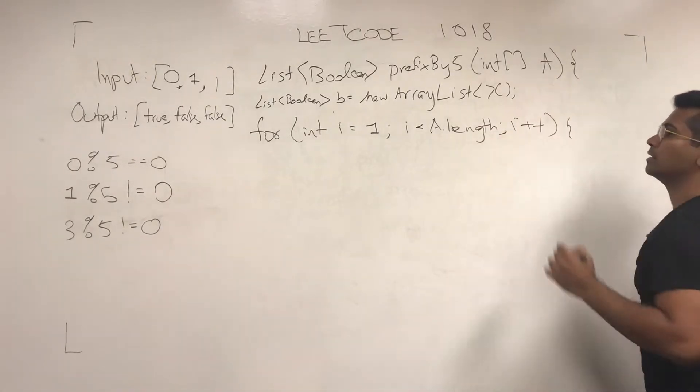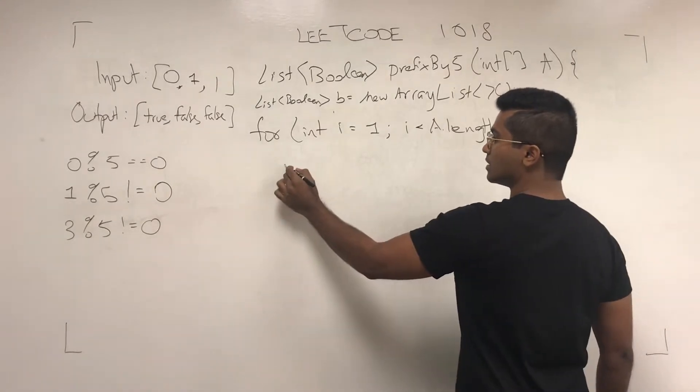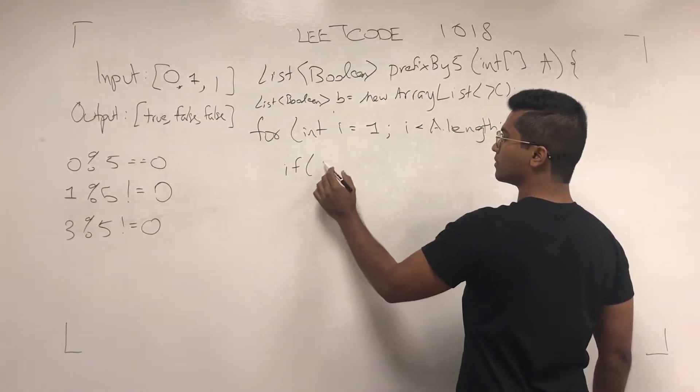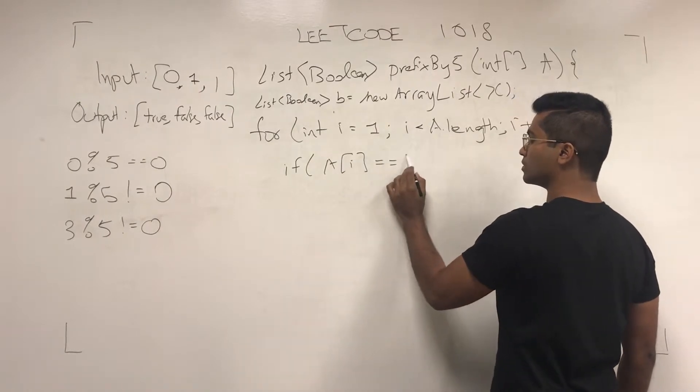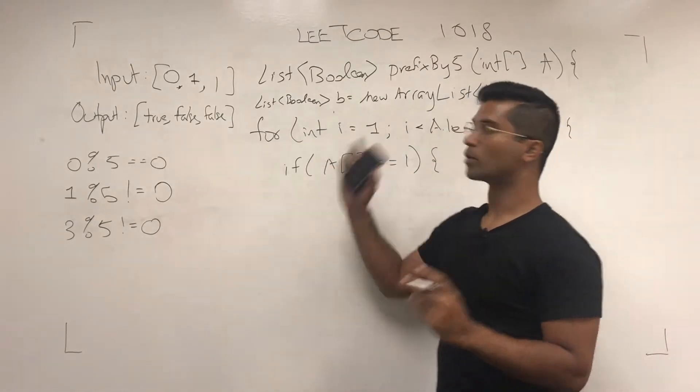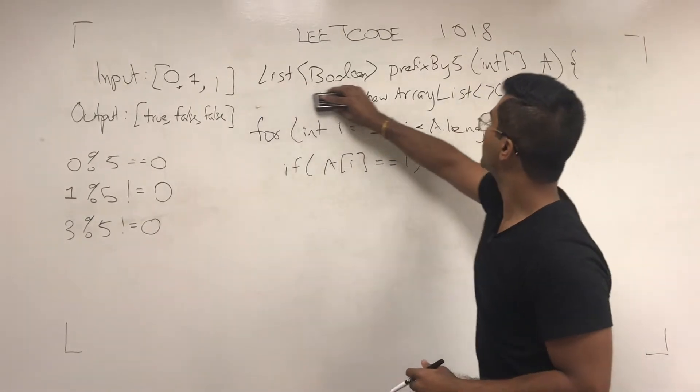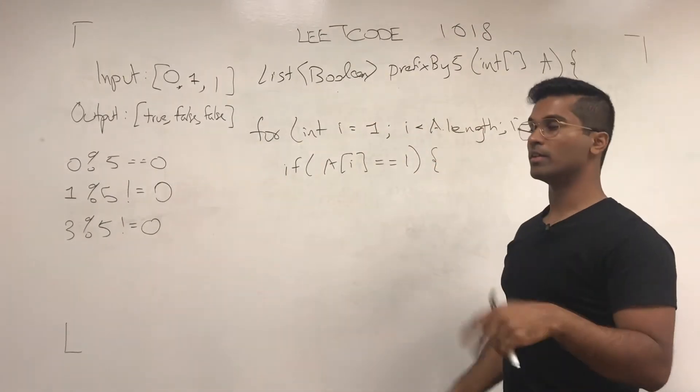and then we're going to see if this guy, if A[i] is 1, what we do is we multiply our start that we had previously by 2 and then we add 1.